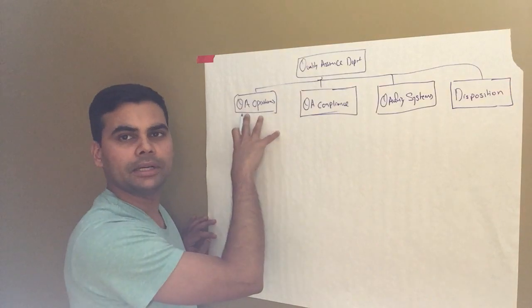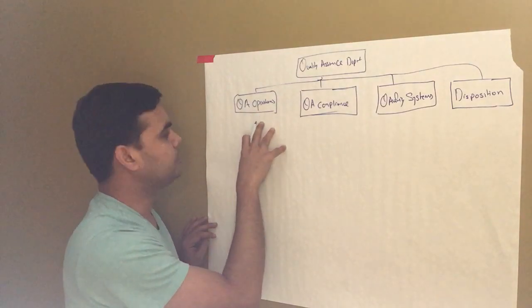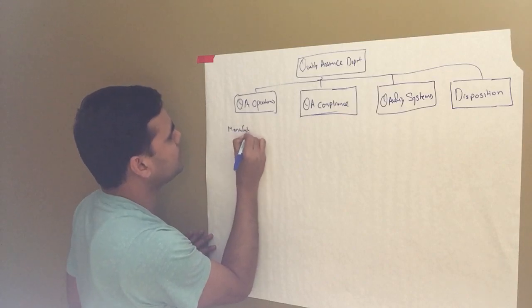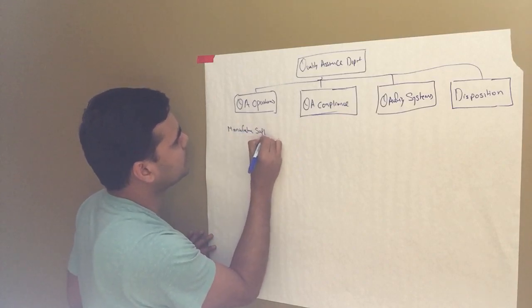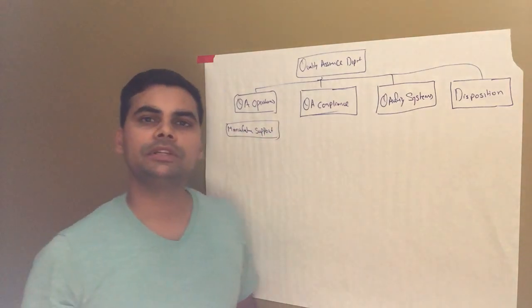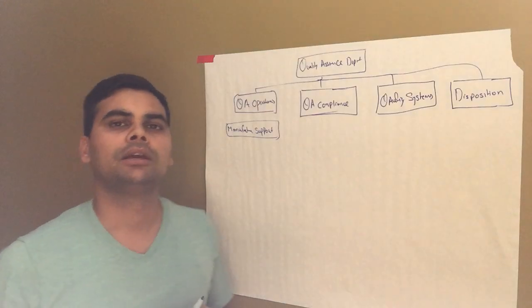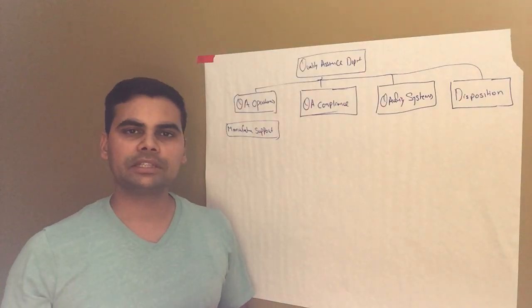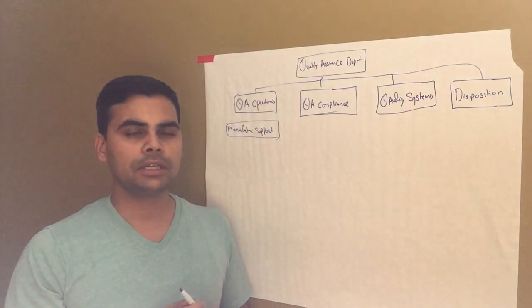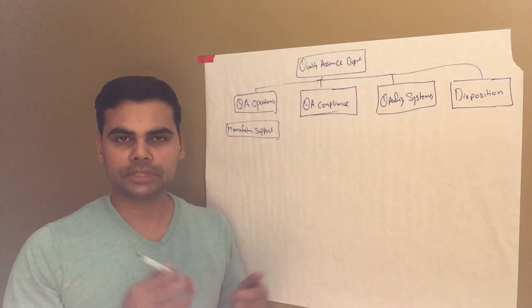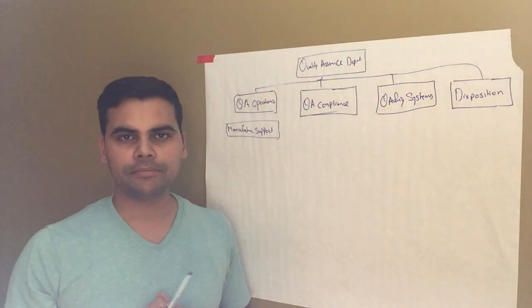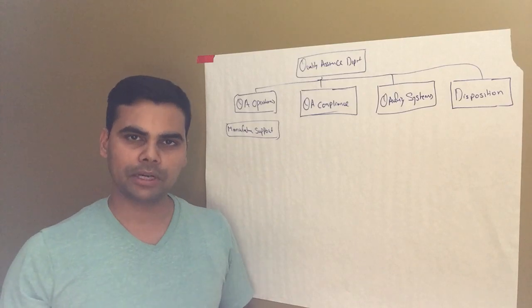Quality operations department - this department deals with manufacturing support. The primary role of this department is to make sure that whatever we are manufacturing on a shop floor, for example in a pharmaceutical process, we have drug substance manufacturing, API manufacturing, then drug product manufacturing, and then finished drug product manufacturing.